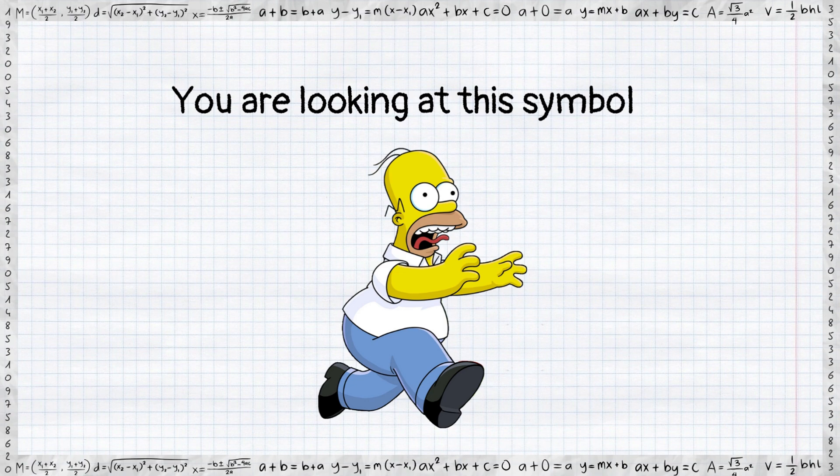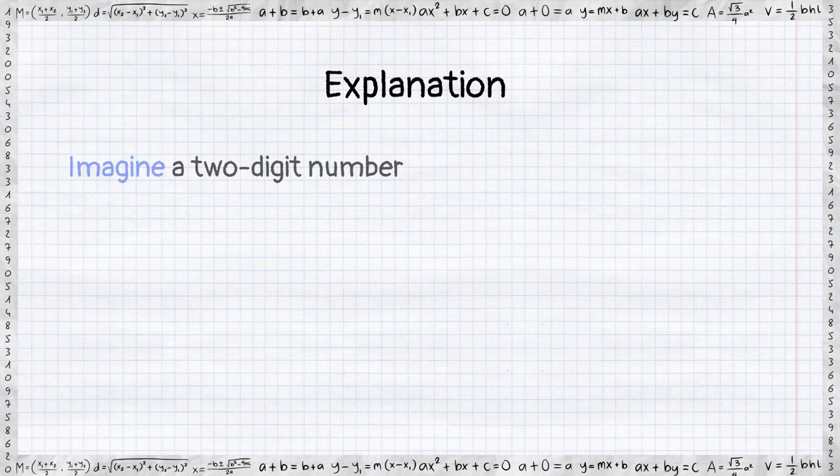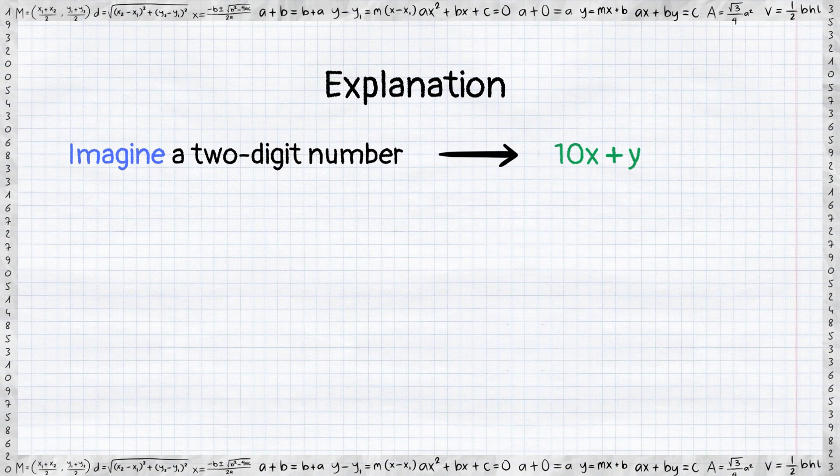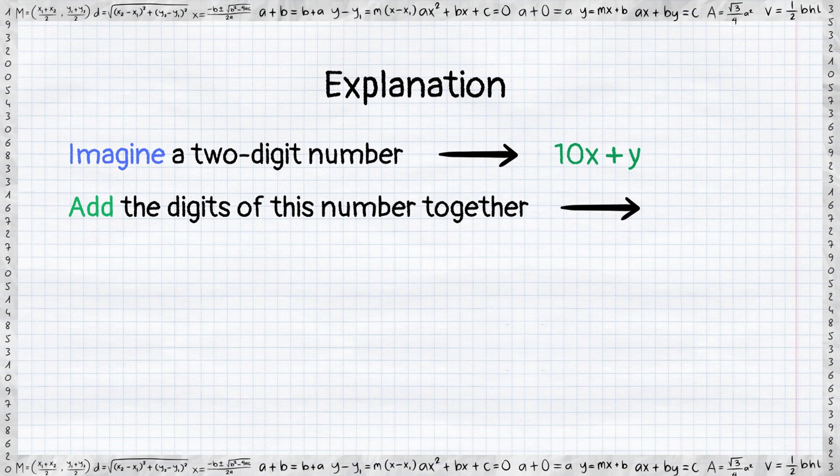How is this even possible? Let's get back to the instructions. A two-digit number can be represented by a binomial 10x plus y. When you are adding the digits of the number together, it gives you the value of x plus y.